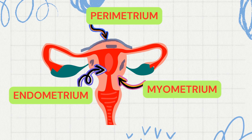This is the musculature of the uterus, and the myometrium is our primary victim in the case of adenomyosis. The innermost glandular layer is the endometrium, which undergoes cyclical changes during the menstrual cycle and is shed during the menstrual phase.